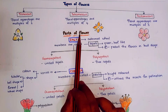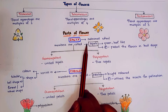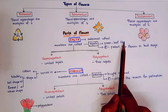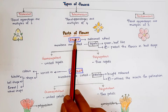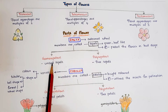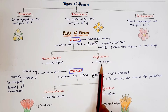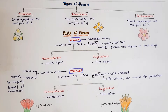Coming to the parts of a flower: the outermost whorl is calyx. The members of calyx are called sepals — they are green and leaf-like structures. The main function of sepals is to protect the flower in bud stage. Calyx is of two types: gamosepalous, where sepals are united to form a single structure, and polysepalous, where the sepals are free.